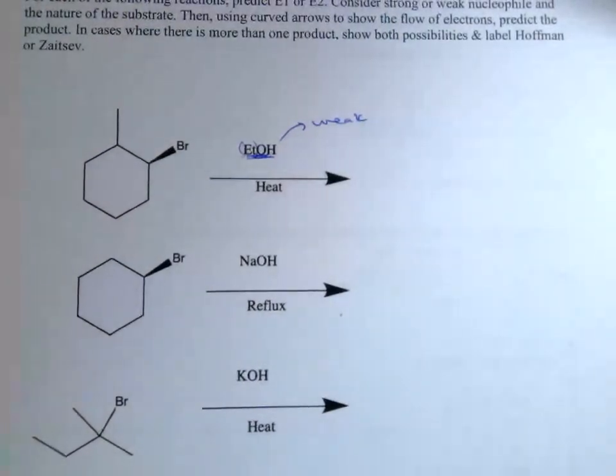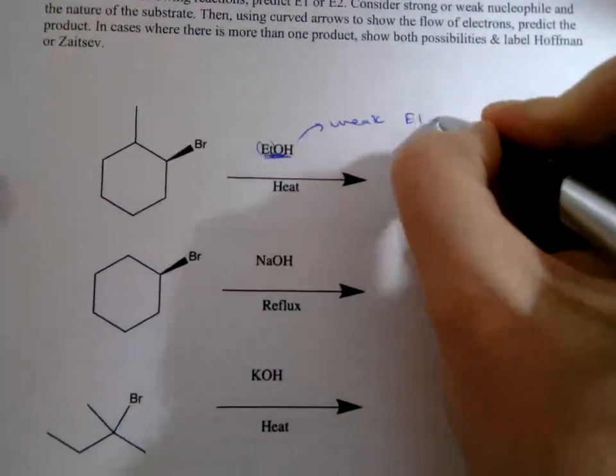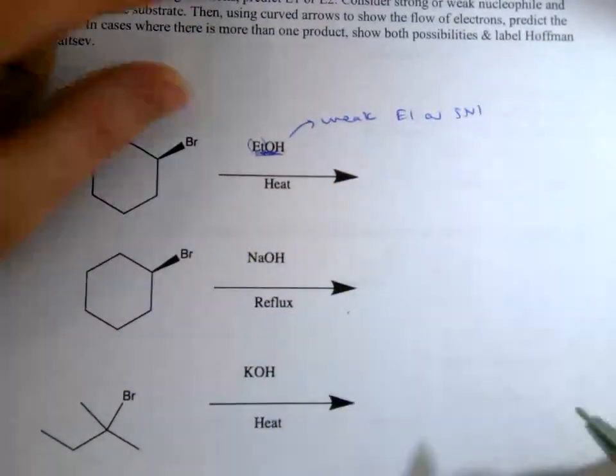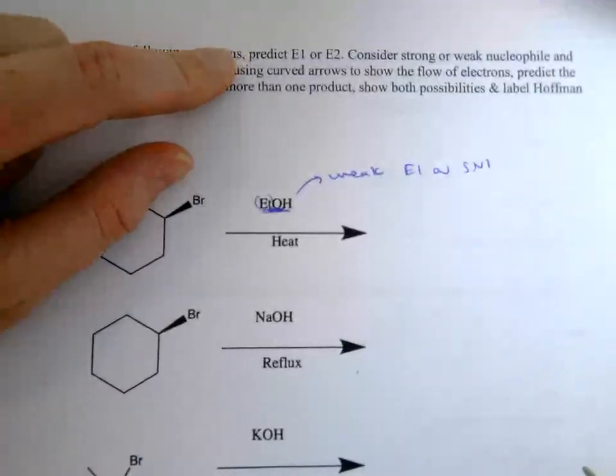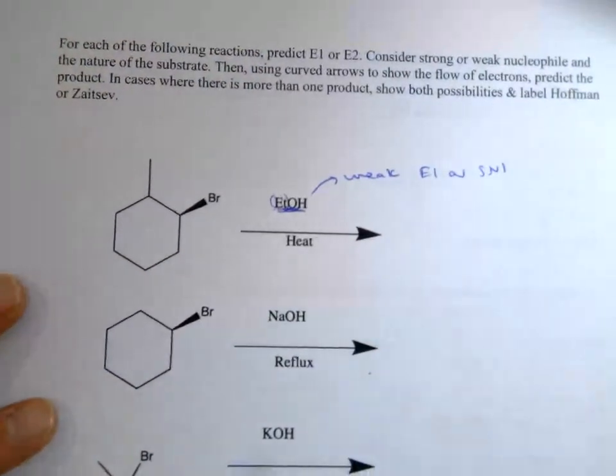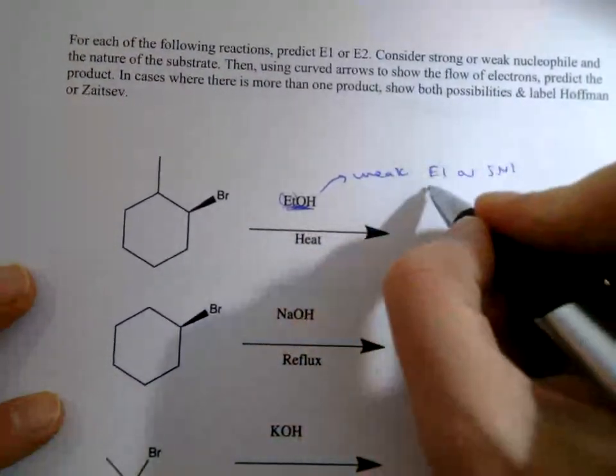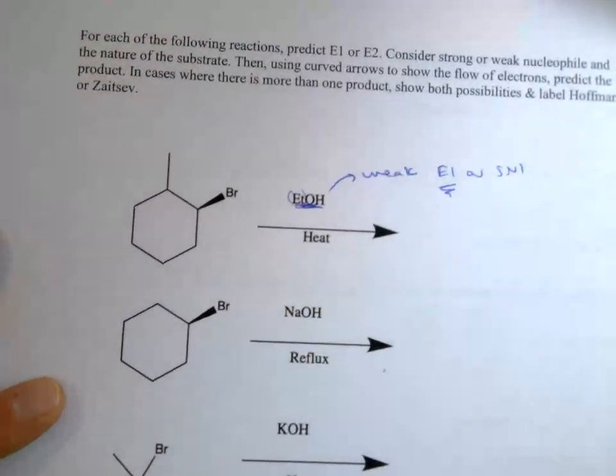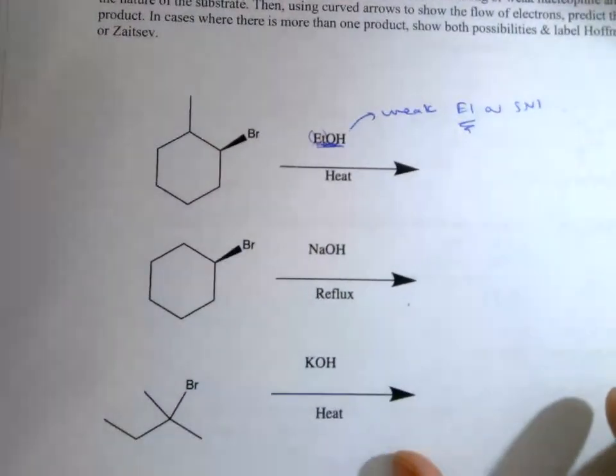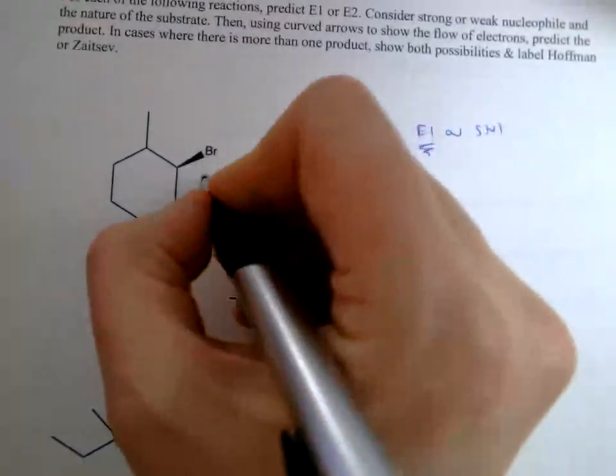Because it is not a metal counter ion, it's just going to go E1 or SN1. The question tells me that it's going to be E1, so I'm guessing it's E1, but the heat also makes me favor E1 over SN1, so I'm pretty confident it's going to go E1.